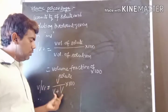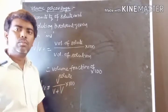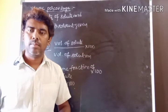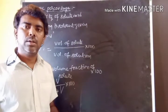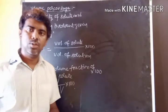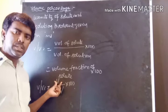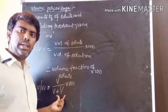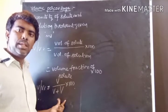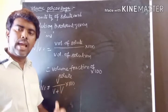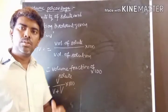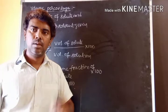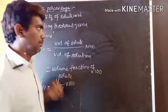Volume of solute by volume of solution into 100 — this is the volume percentage. There are no units for volume percentage, because the volume of solute is in milliliters and the volume of solution is also in milliliters. Milliliters divided by milliliters cancel out, leaving no units. Now we will discuss a problem.